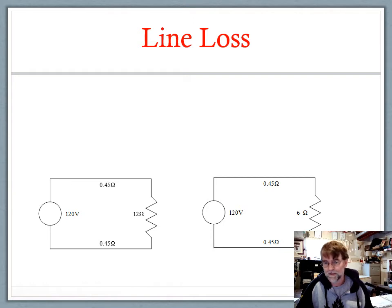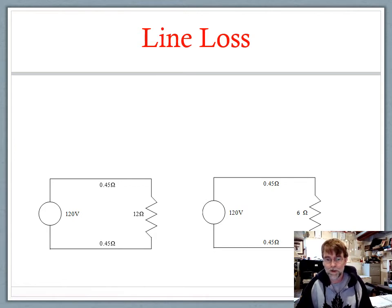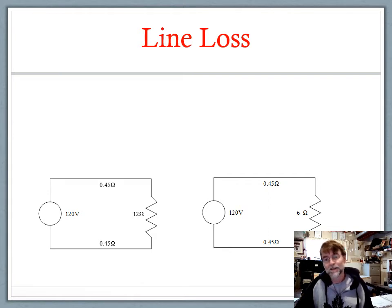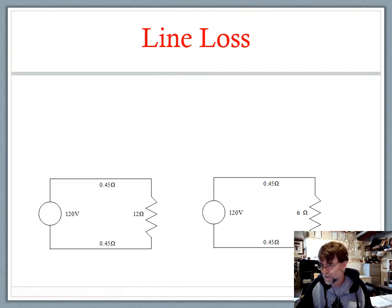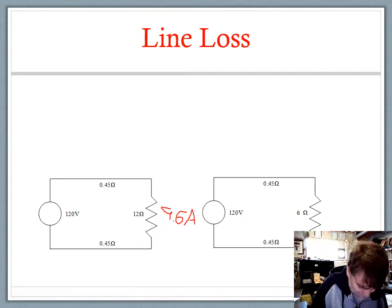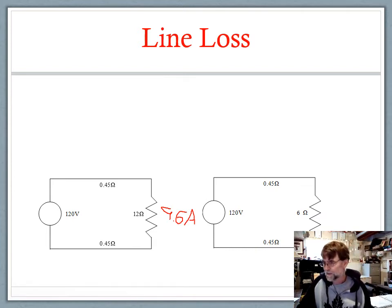Remember, a smaller ohmic value represents a larger electrical load — it allows more current to flow, draws more current, which is the equivalent of a larger electrical load. There will be more work done at the 6-ohm resistor than the 12-ohm resistor. With the first circuit, we had 9.6 amps flowing. Taking 9.6 and using the I-squared R equation — 9.6 squared times 12 ohms — means there's a little over 1,100 watts of work being done there.